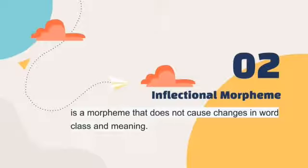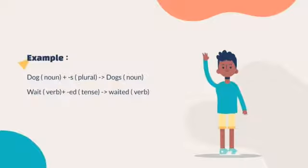The inflectional morpheme is a morpheme that does not cause change in the word class and meaning. This morpheme only affects the number or plurality and form of time. For example, you can see in the video.